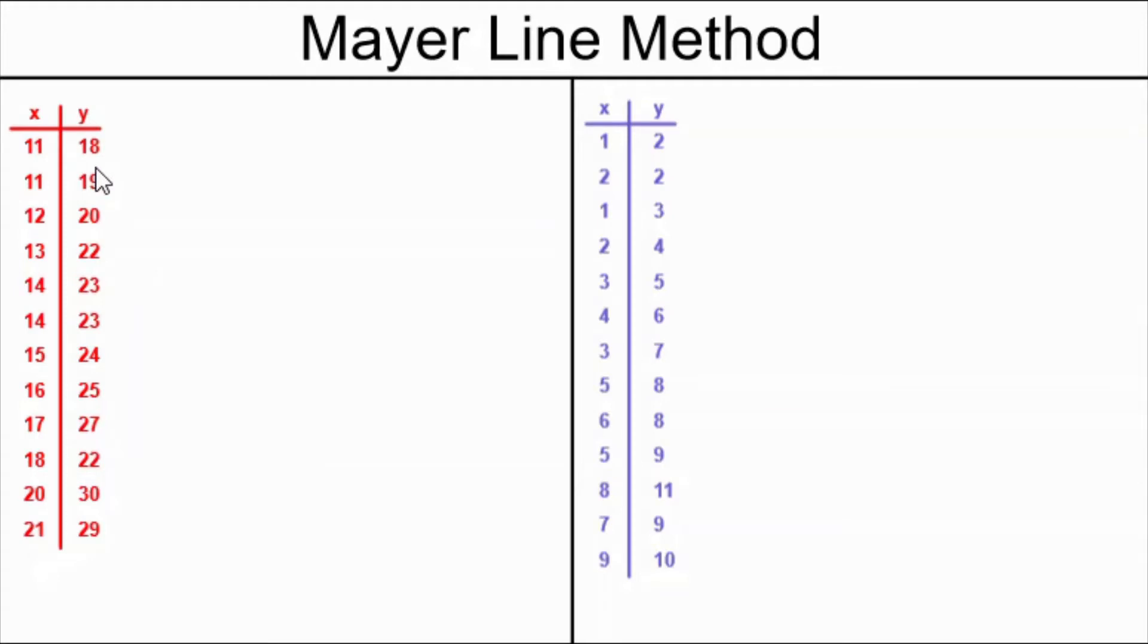With my red example, the data is already arranged in increasing order of x values. So the trick is I have to divide the table into two smaller tables of the same size.